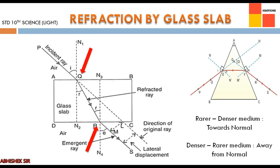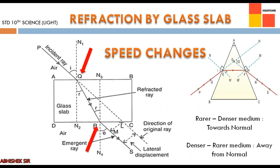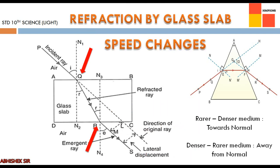Now let us know what is the cause of refraction. Refraction is due to the change in the speed of light as the light ray enters from one transparent medium to another. The key word is that speed changes when the light ray moves from one medium to another.